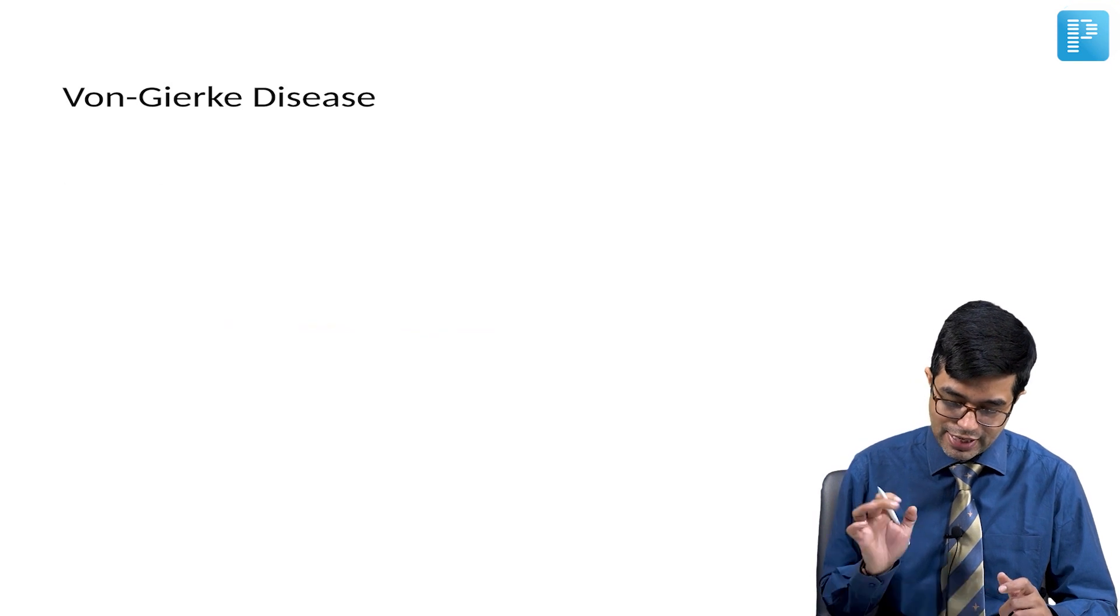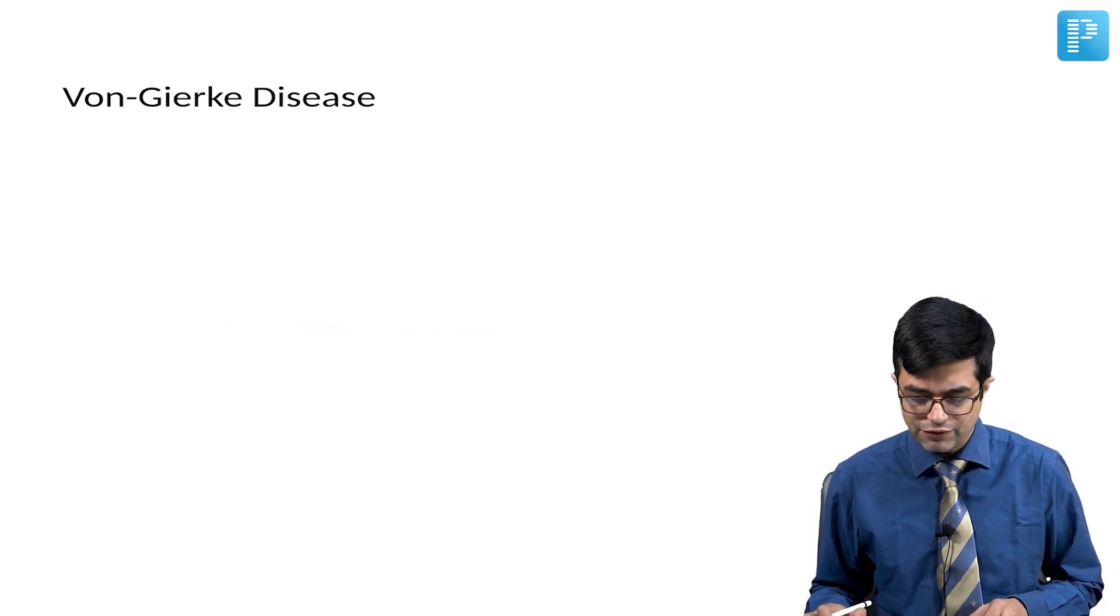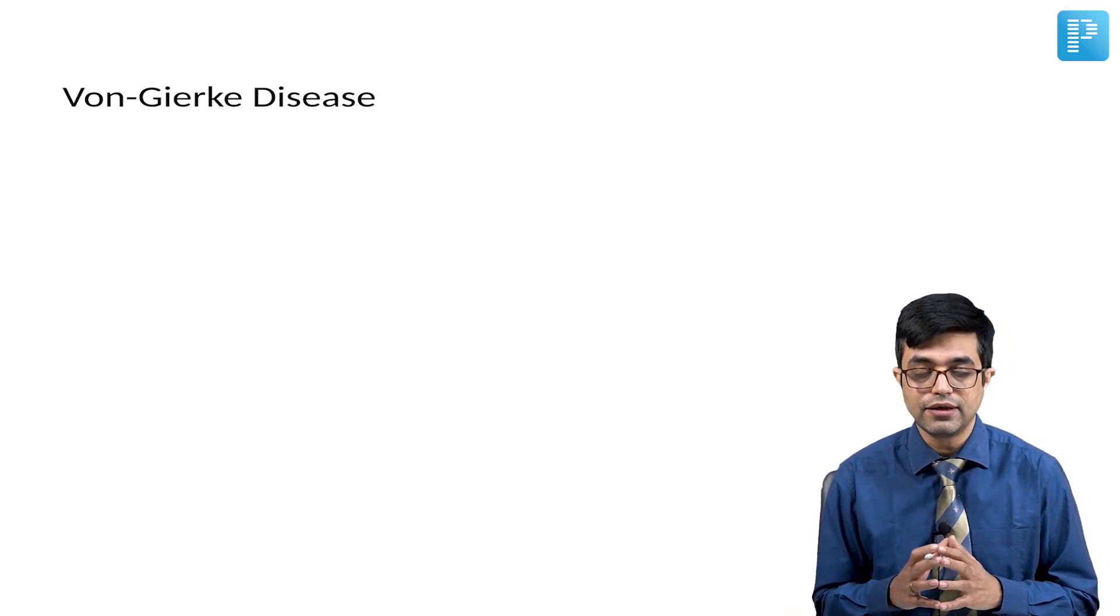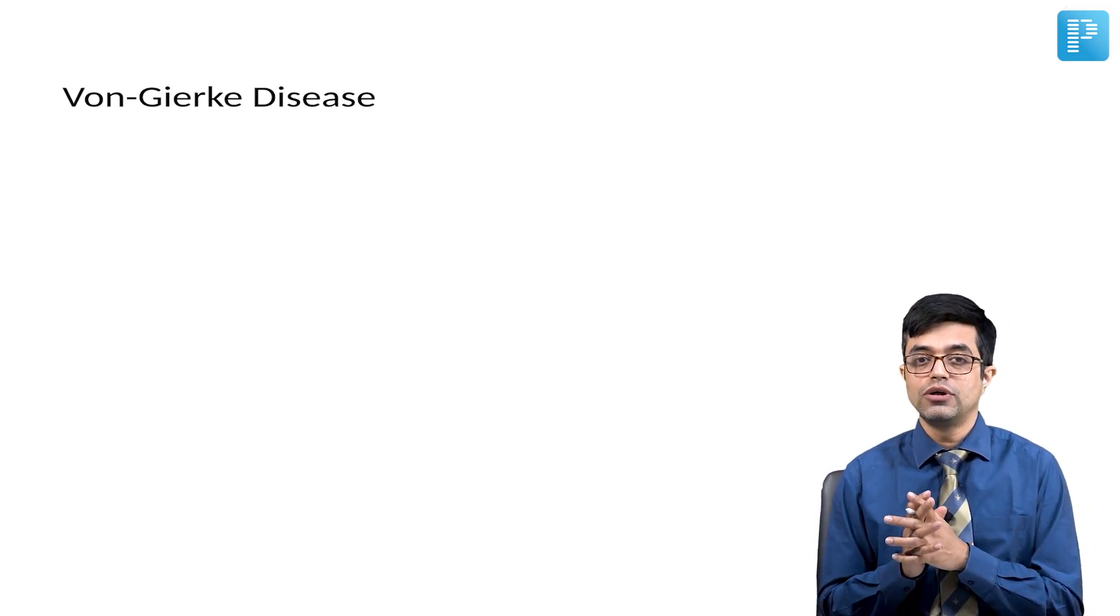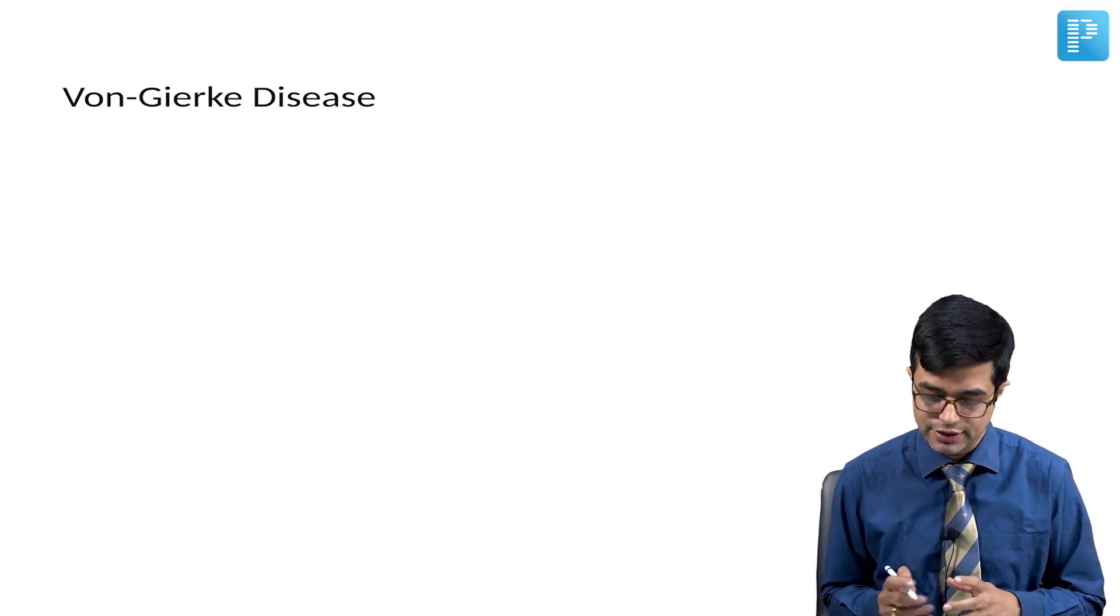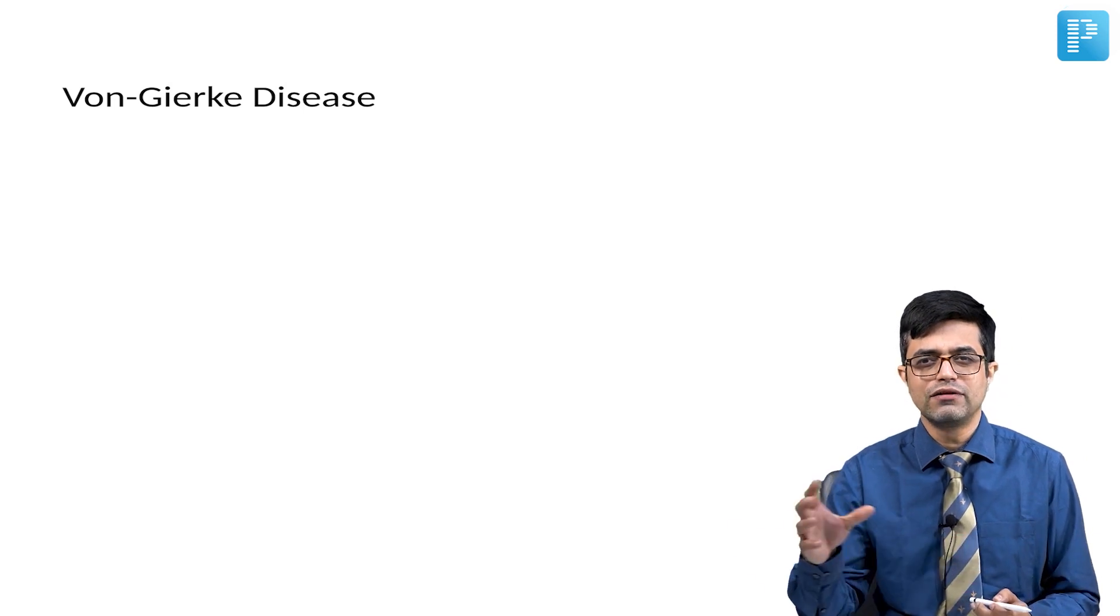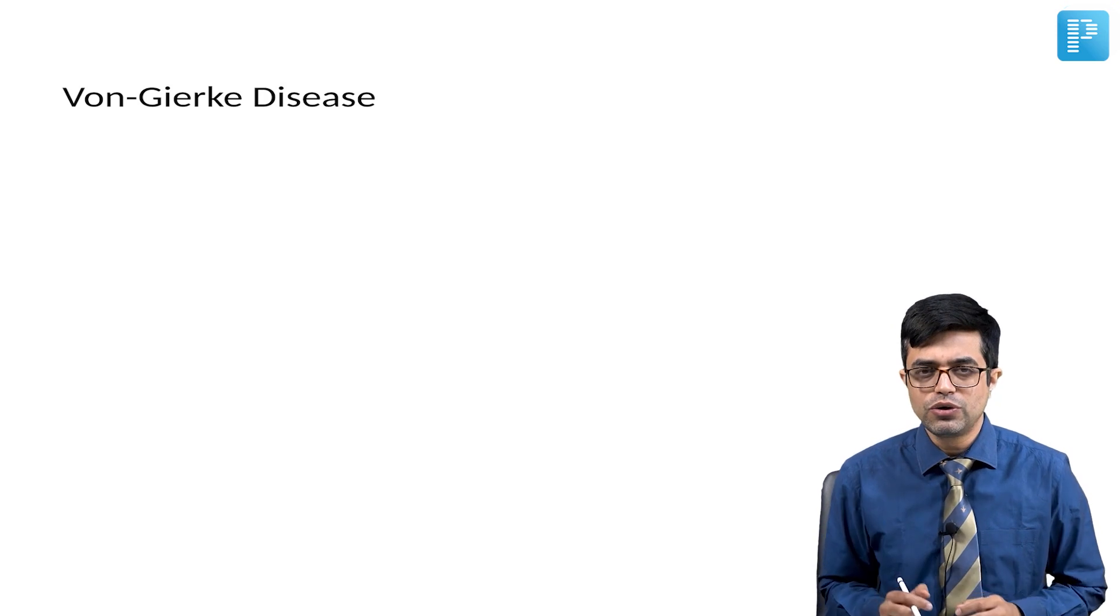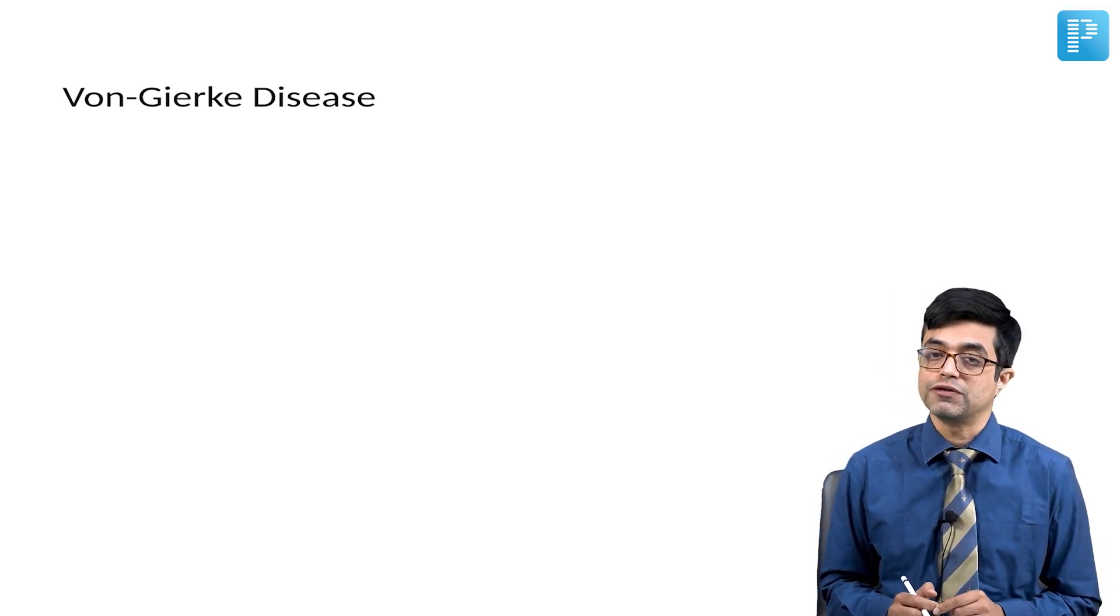What exactly is happening in Von-Gierke disease? Let us try to understand. Remembering the features is one thing, but only if you understand the reason will you not only be able to mark the correct answer and remember the features, but also be able to answer statement-based questions which are asked in the exam. When glycogenolysis is happening, the terminal step for conversion into glucose is mediated by the enzyme known as glucose 6-phosphatase.